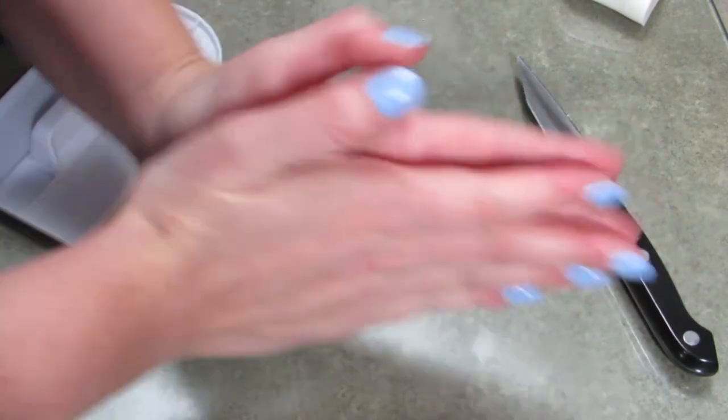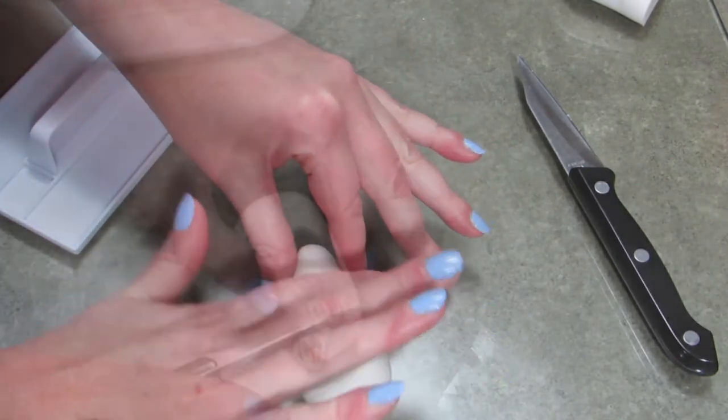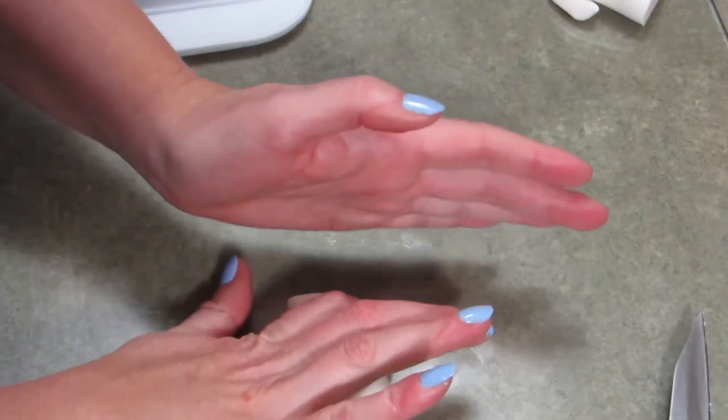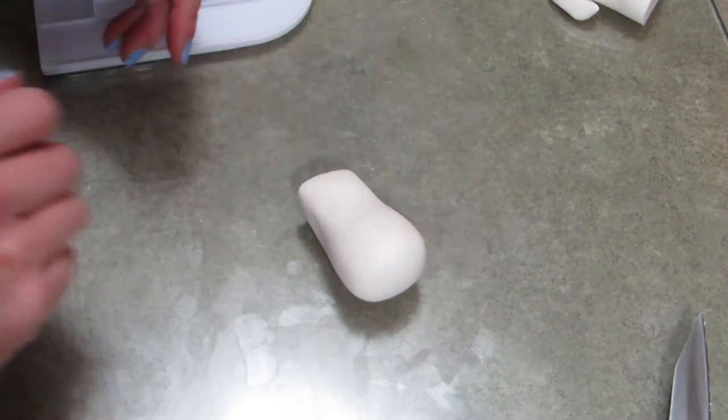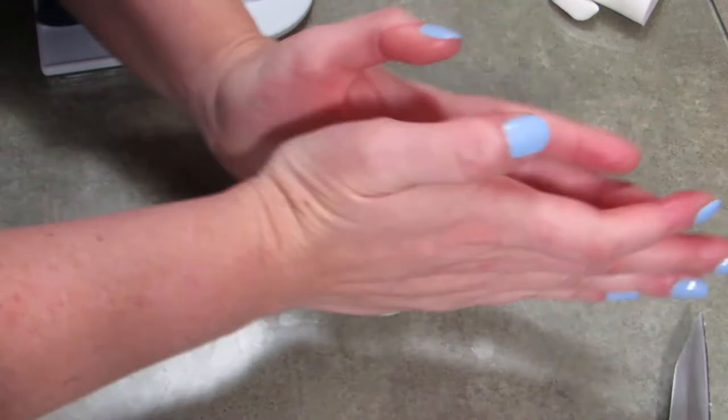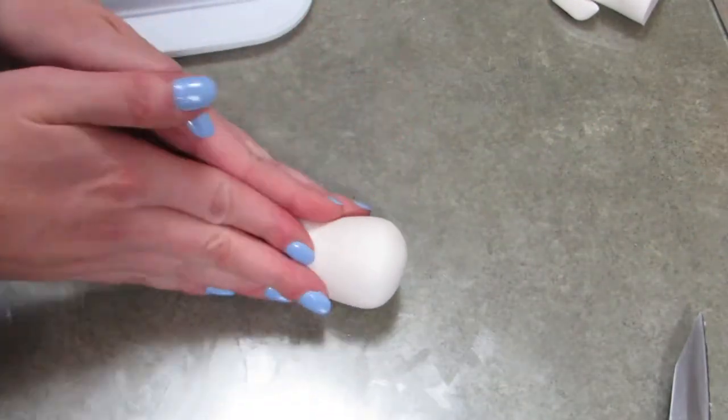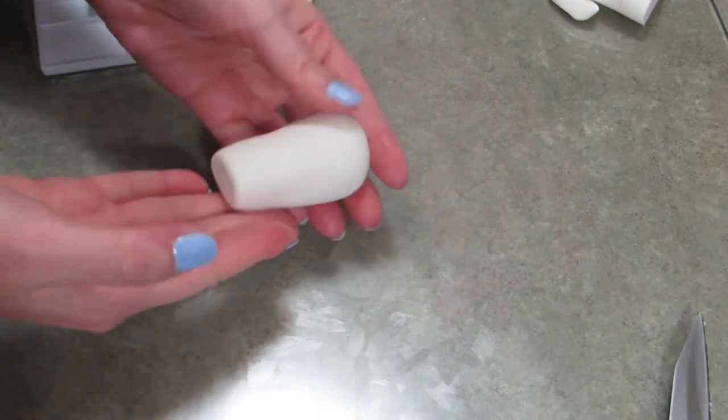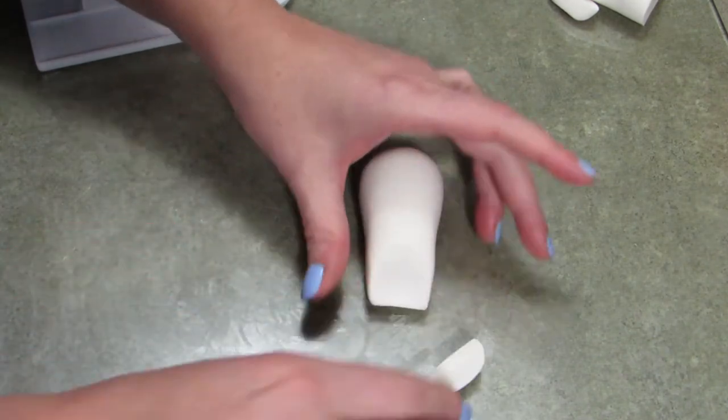One end you're going to leave nice and rounded because that's going to become her bottom. The front we're going to taper and trim to turn into where her head is going to attach. I'm just making sure to shape it so the shoulders and back area is a little bit lower. Her rump is nice and round and My Little Pony-ish. And the front gets a little thinner too. Once you get a good shape you're happy with, trim off a little bit at the top at an angle. That's where her head is going to go.